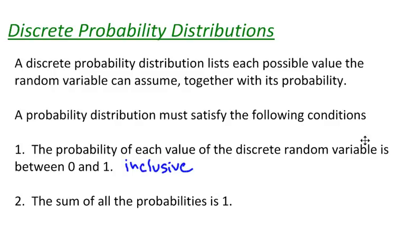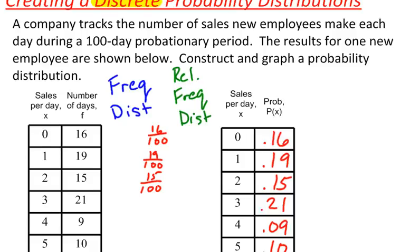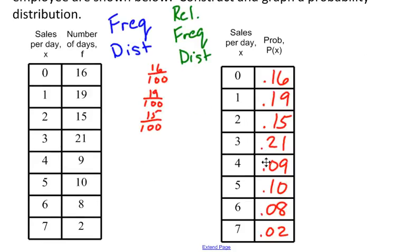The sum of all the probabilities must be equal to 1. When you add up all of the probabilities, you need to make sure it equals 1. If it's greater than 1 or less than 1, you've made a mistake somewhere. Going back to this example, if I add up all of these, I know that it does equal 1 when I add them all together.